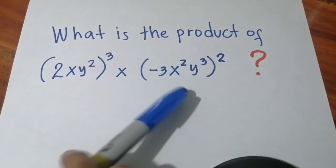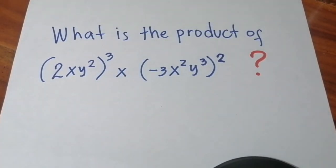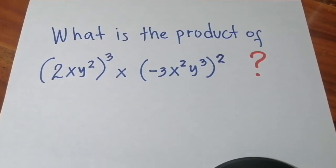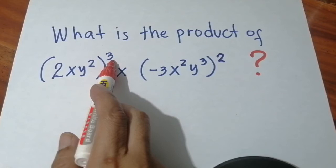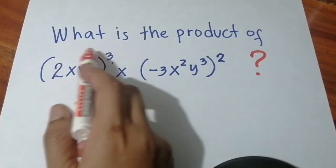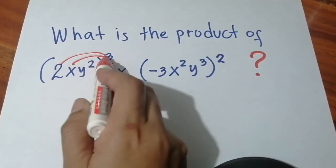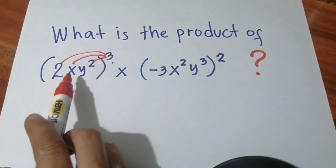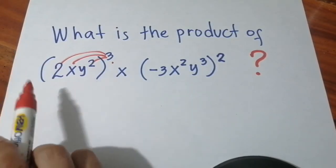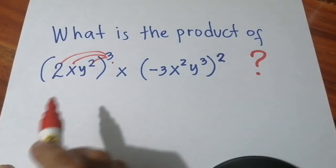The first thing you need to do is simplify the exponent by multiplying this outside exponent, or distributing it to everything inside. It's not only to 2, it's not only to x, but to 2xy squared.